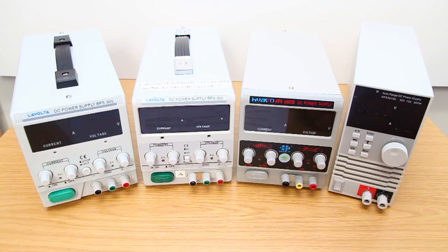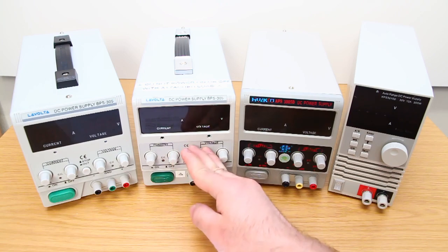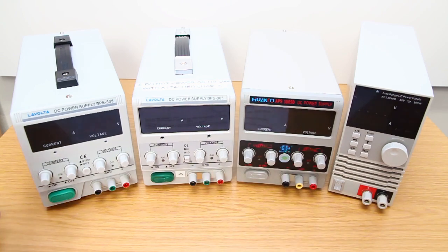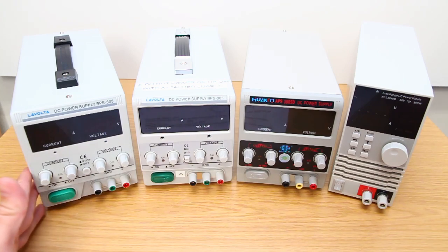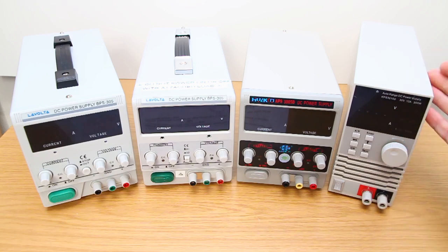I think these results are quite surprising. The Huaco and the previous generation LaVolta linear power supplies actually did quite well and kept their ripple below the spec'd 3 millivolts RMS value. The high ripple of the BPS305 Mark II power supply is probably caused by the way it is wired internally. And it was also interesting to see how much the ripple amplitude varied between two different units of the same make and model. The high variation is probably due to slight differences in the manufacturing process, like where the wires were placed exactly.